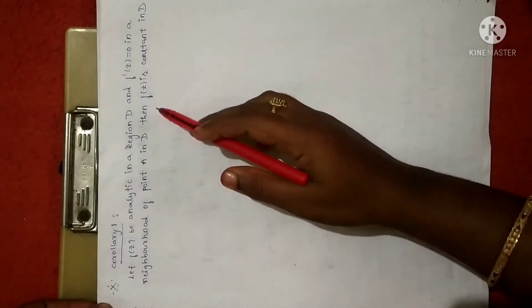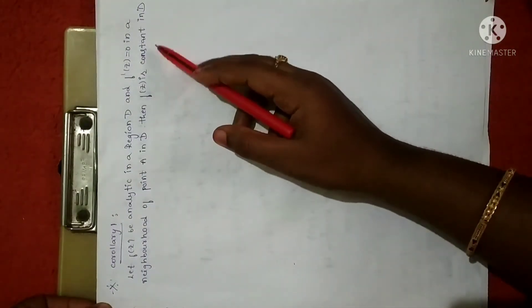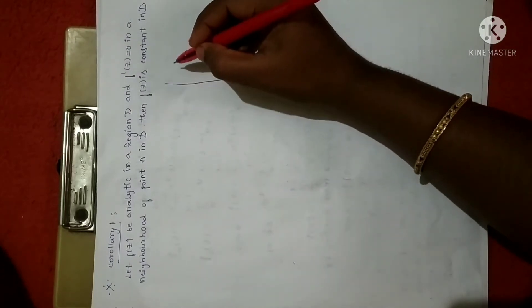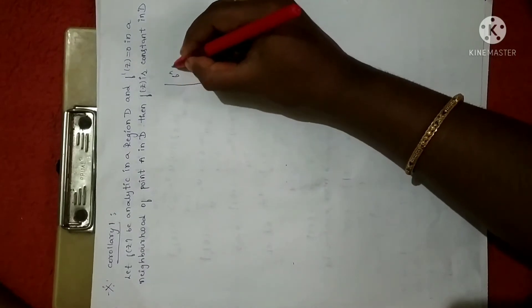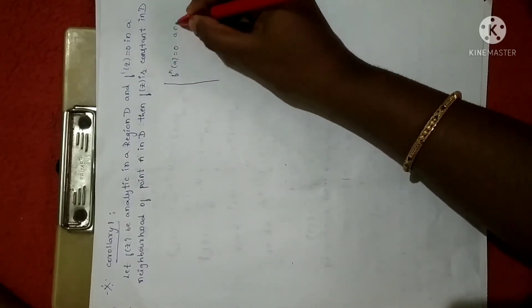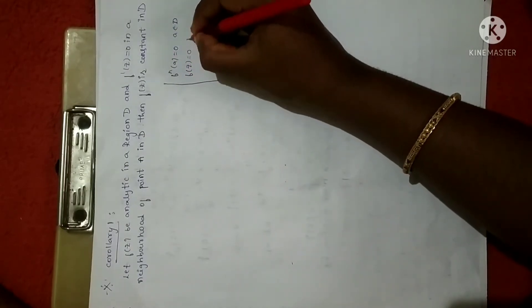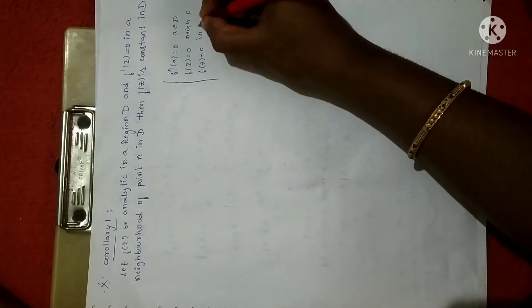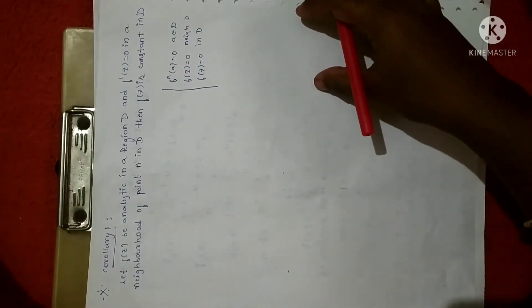Corollary one says that suppose f(z) is analytical in a region D and f'(z) is equal to 0 in a neighborhood of a point A in D, then we have to prove that f(z) is constant in D. Before proving this corollary, let me revise the theorem from the previous session. The theorem states: f^n(A) = 0 for any point A in D, f(z) is analytical, and f(z) = 0 in a neighborhood of D are all equivalent — and if any one holds, f(z) = 0 in region D.